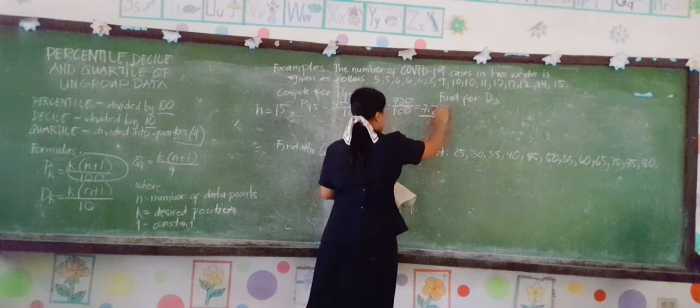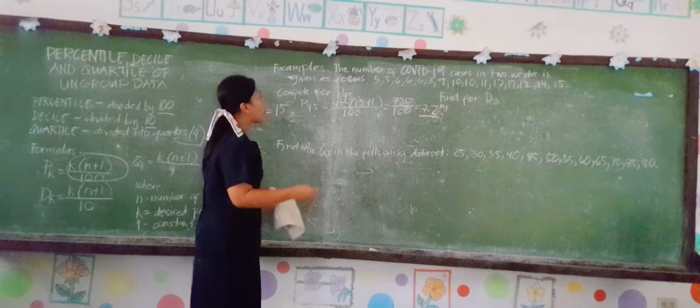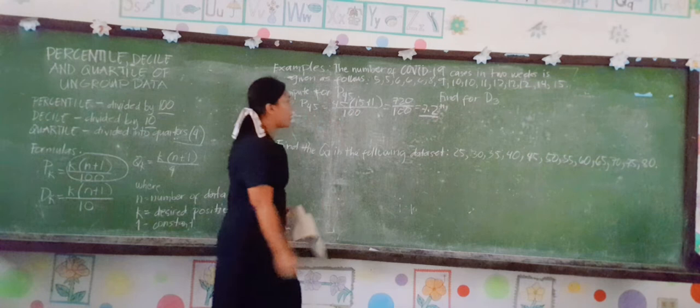This is the position. Since the position of P45 is not a whole number, we have to find the 7th and 8th entries and interpolate the remaining 0.2.